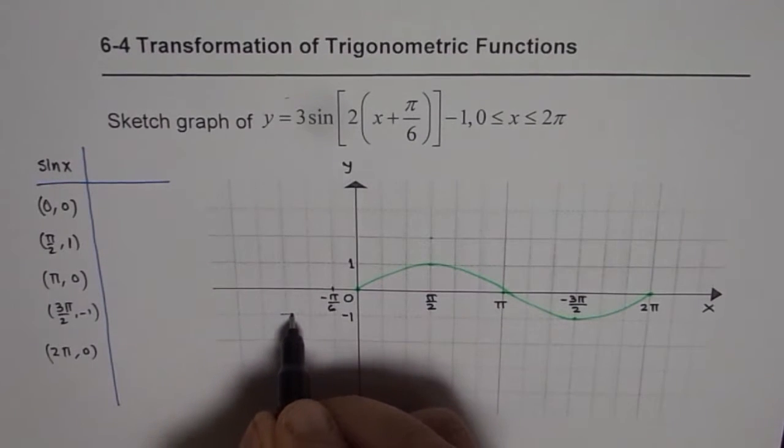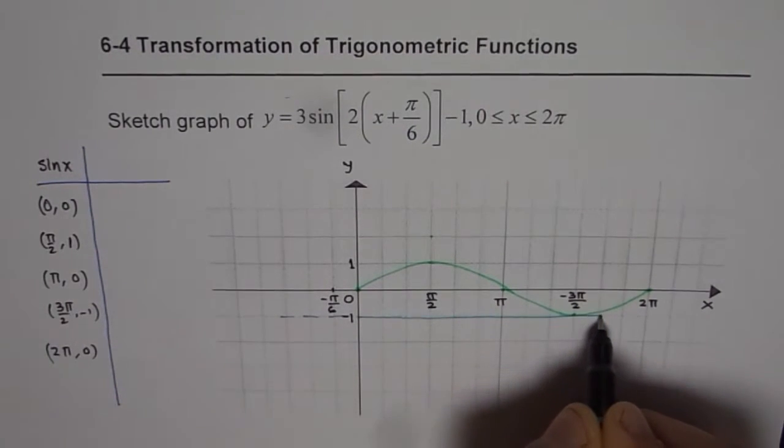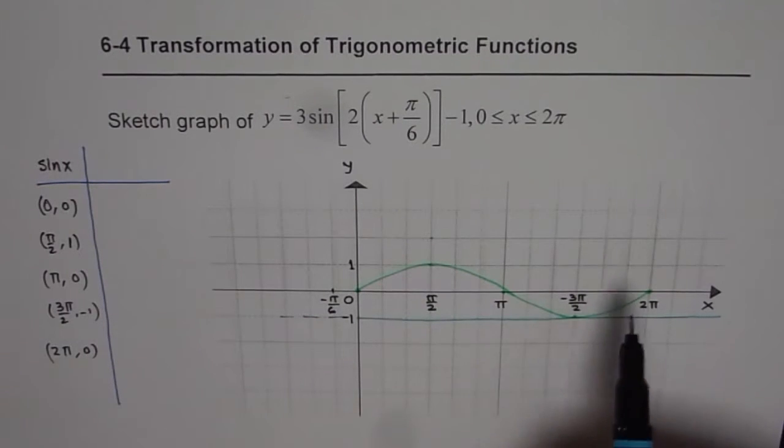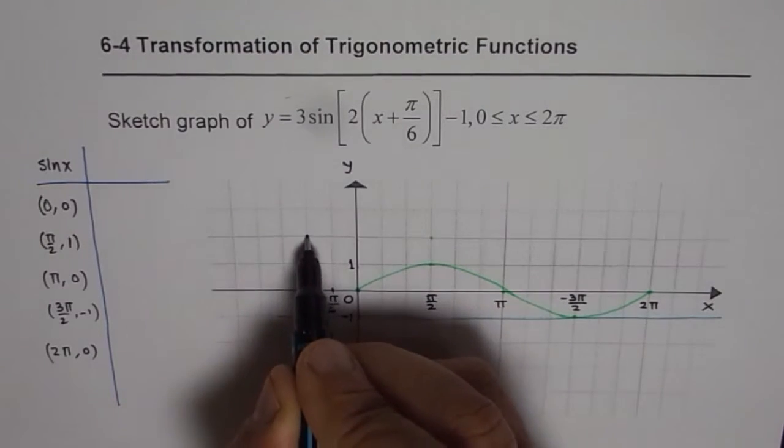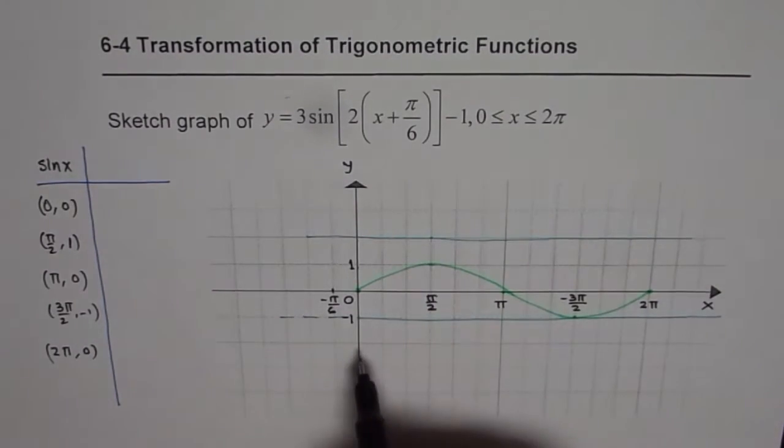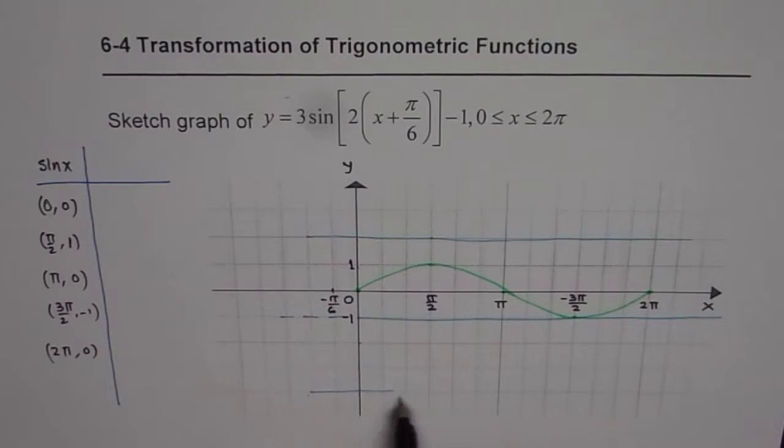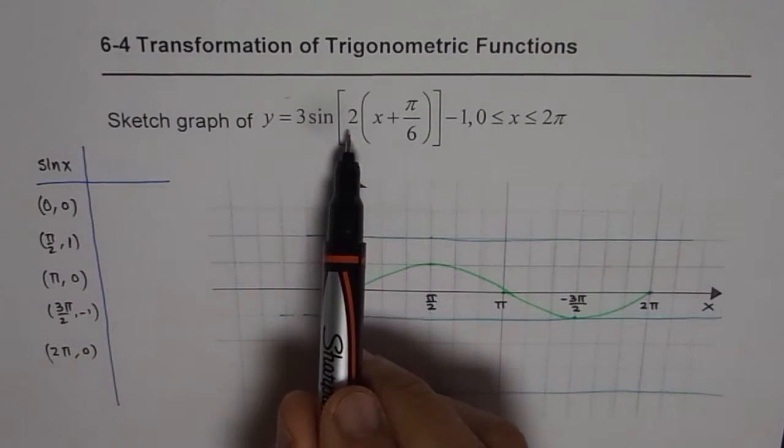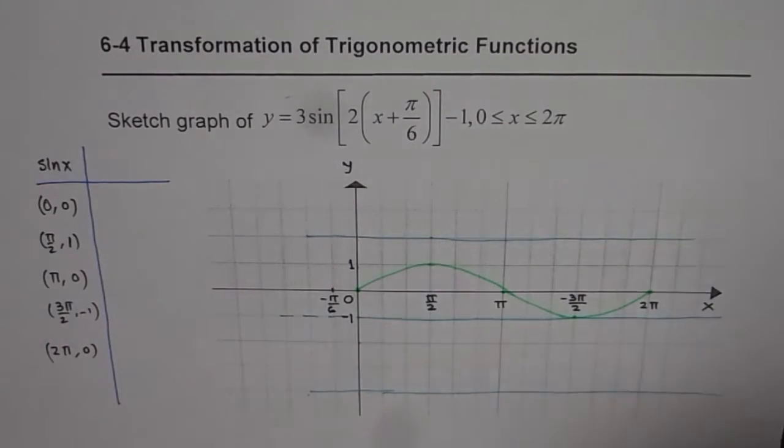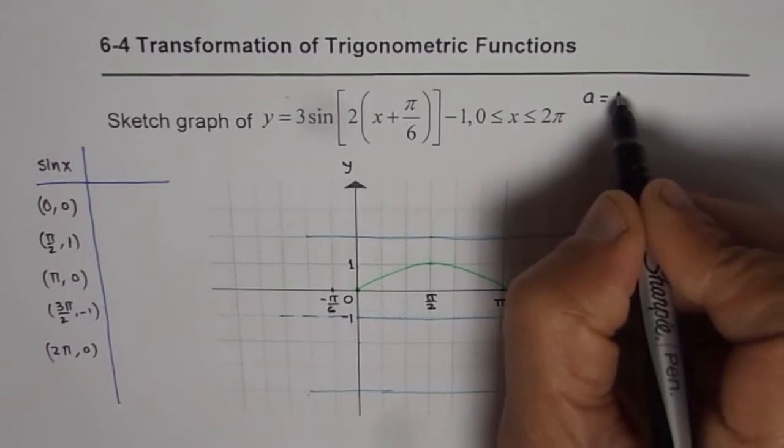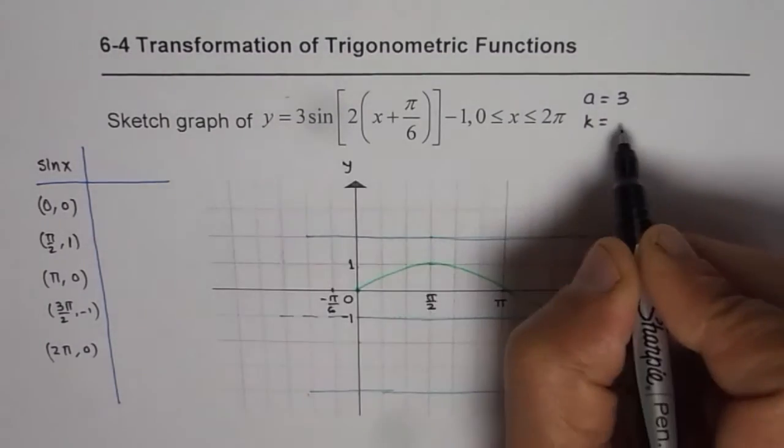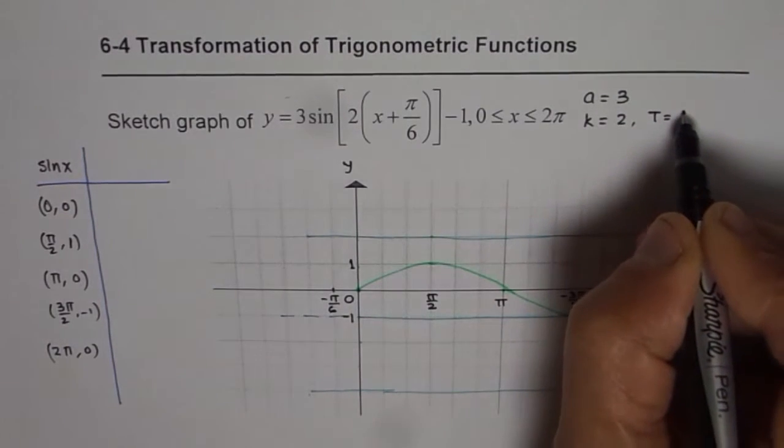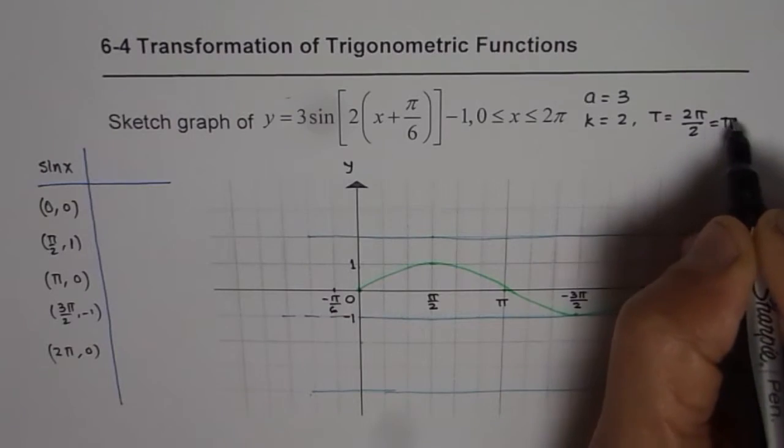So the axis for our graph will be now here. That becomes the axis. And maximum will be 3 more than this: 1, 2, 3. So that is our range maximum side. Minimum will be 3 less: 1, 2, 3. So I am roughly teaching you how to sketch it, and this is a very accurate method. Now the time period is half. Let's analyze this. What we have here is amplitude is 3 for us. K is 2. That means time period is 2 pi by 2, or equals to pi.